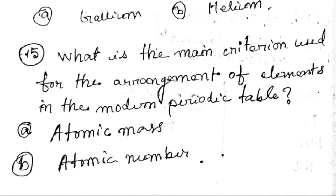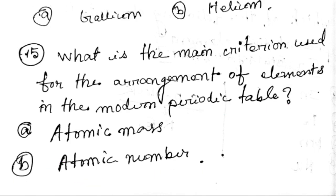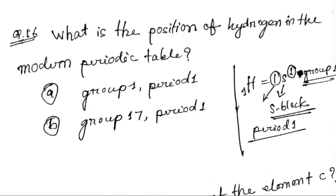Next question: what is the main criterion used for the arrangement of elements in the modern periodic table? Next question: what is the position of hydrogen in the modern periodic table?